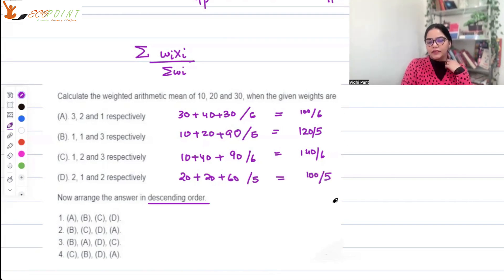So 100/6 is smaller than 100/5. These are the values you will get. In descending order, it's B, C, D, A.